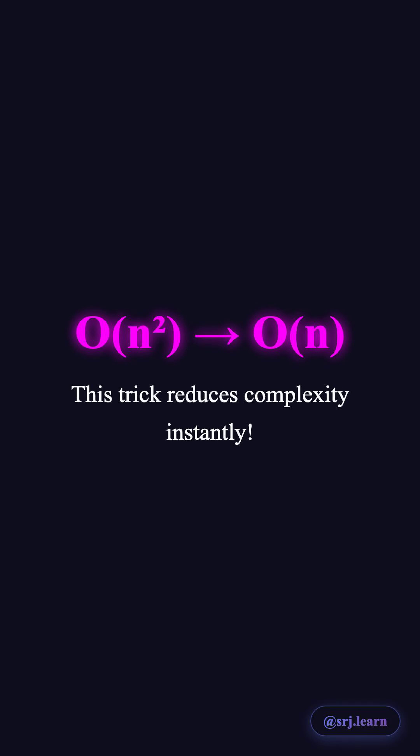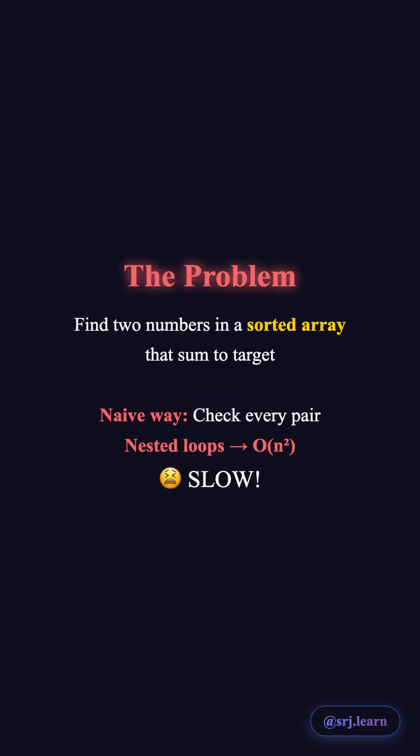This trick reduces O(n²) to O(n). Here's how. The problem: find two numbers in a sorted array that sum to a target. The naive way checks every pair with nested loops — that's O(n²).